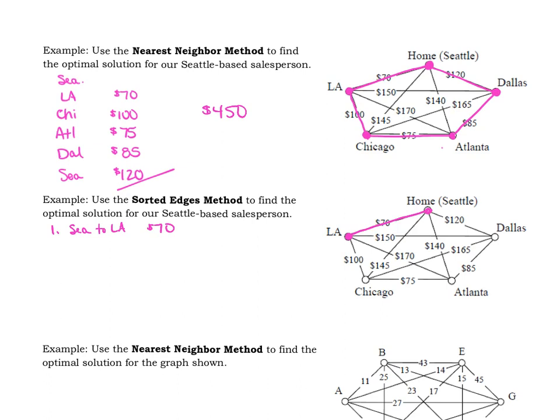Then step two in the algorithm says, repeat step one, adding the cheapest unused edge to the circuit unless A, adding an edge creates a circuit that doesn't contain all the vertices. So in other words, you're going to end up with a circuit that you didn't go to say Atlanta. You went to the other four cities but you didn't go to Atlanta or adding an edge would give a vertex degree three. So we don't want to give any vertex a degree three. So we're going to look now for the next cheapest city. Now it does not say it has to be connected to Seattle or LA. We just look for the next cheapest flight. That's the $75 from Chicago to Atlanta.